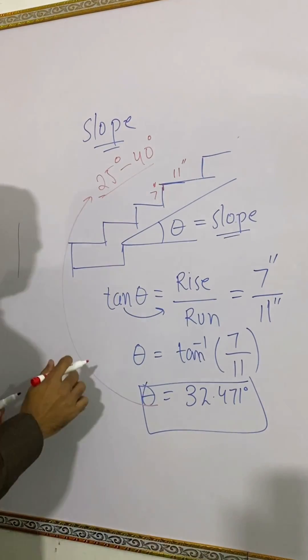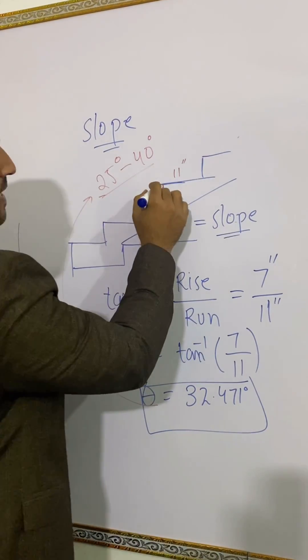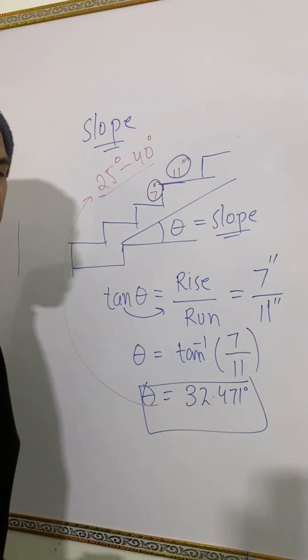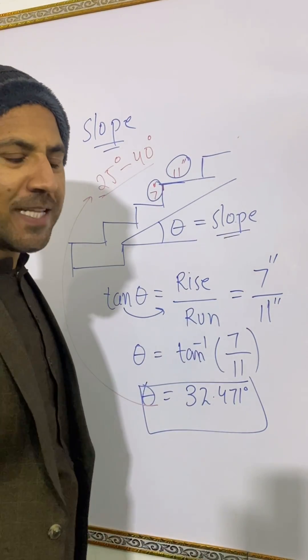As you can see, this is within the limit. That means we can have 7 and 11 as the parameters of the staircase. See you in the next video.